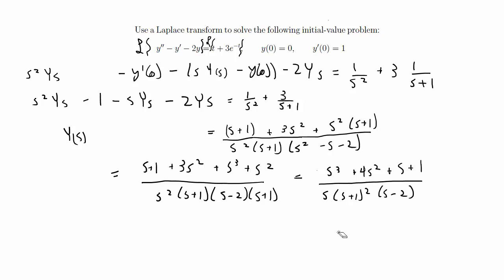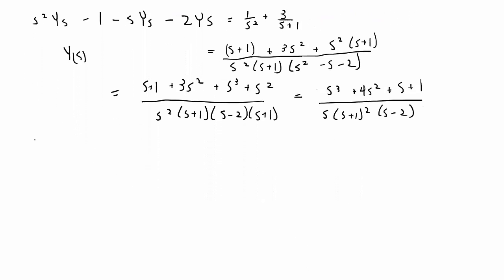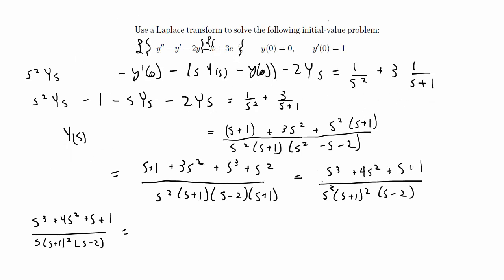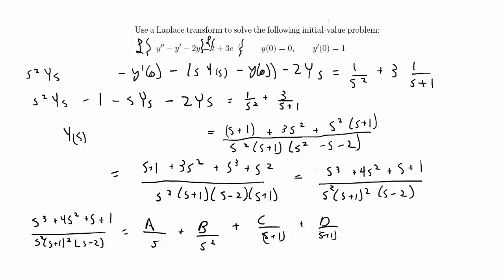Now we have it in a form where we can do partial fraction decomposition. So s cubed plus 4s squared plus s plus 1 over that denominator decomposes as A over s, plus B over s squared, plus C over s plus 1, plus D over s plus 1 squared, plus E over s minus 2. When you have something to the second power, you include both the first and second power when decomposing.